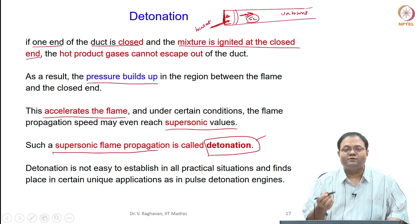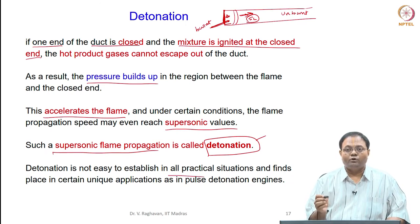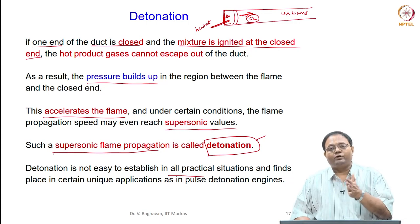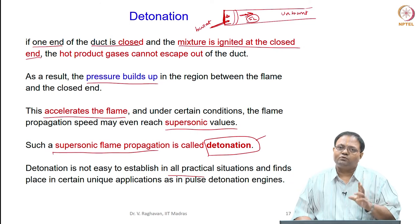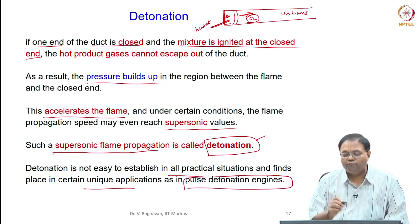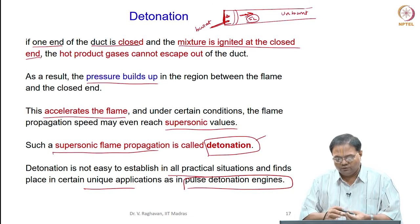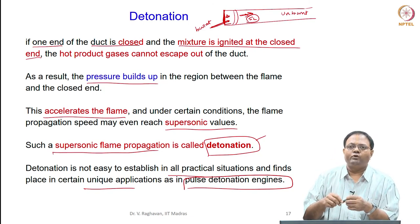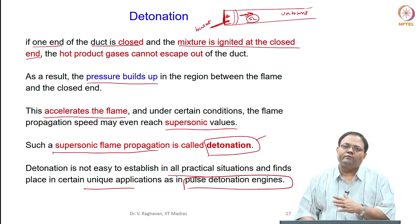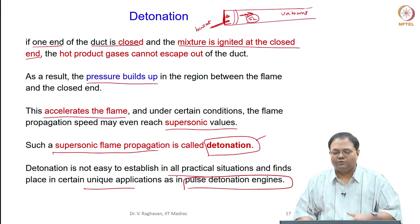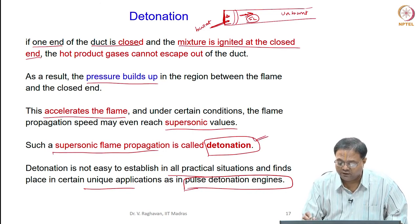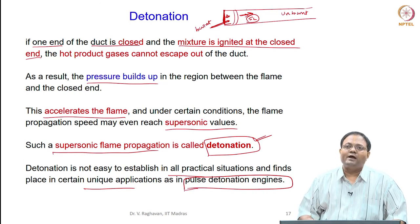You will not always see detonation - it is not easy to establish in all practical situations. Just taking a tube with a closed end and igniting it will not give supersonic velocities. There may be a transient propagation with increasing SL values, but reaching supersonic conditions is not easy. Some unique applications like pulse detonation engines use this - a specific type of engine where pulses of large quantities of fuel are fed and burn faster. Lot of research has been done on this, but it is a special application.